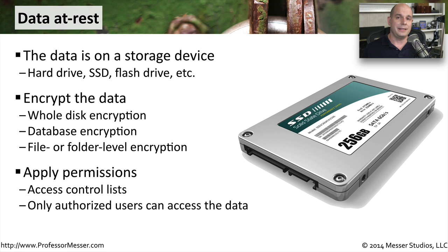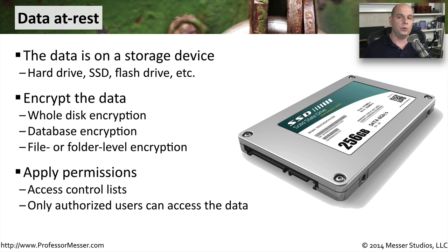Regardless of whether that data is going to be encrypted or not, we still have to apply the appropriate permissions to that data. If this is accounting information, then the accounting department may have access to look at and change that data, but you don't want shipping and receiving to have any access to that information. So there are going to be access control lists built into your network devices and into your operating systems that will only allow authorized users to gain access to that information.